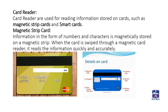Fifth, we have the card reader. Card readers are used for reading information stored on cards such as magnetic strip cards and smart cards. On magnetic strip cards, information in the form of numbers and characters is magnetically stored on a magnetic strip — the black line you can see on the card. When the card is swiped through a magnetic card reader, it reads the information quickly and accurately. Your data is stored in these magnetic strips, and they are generally used in debit cards and ATM cards.